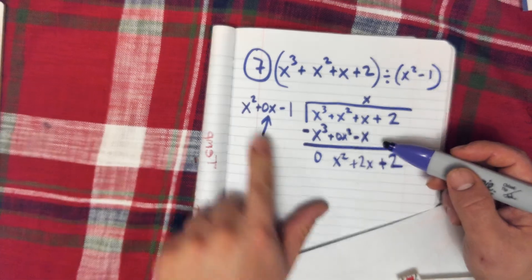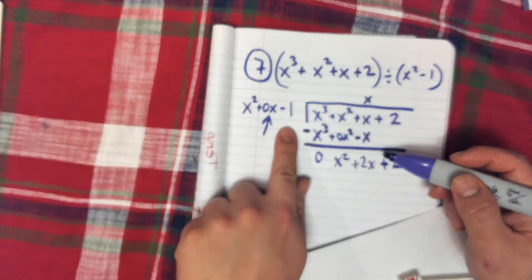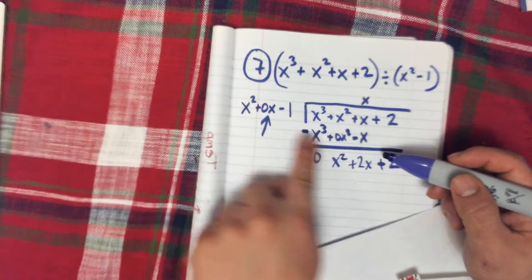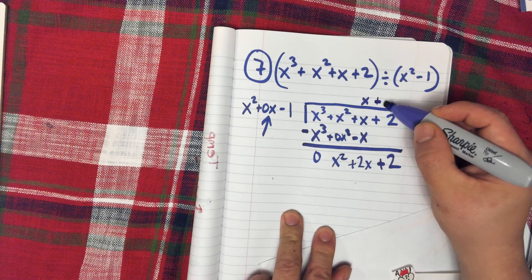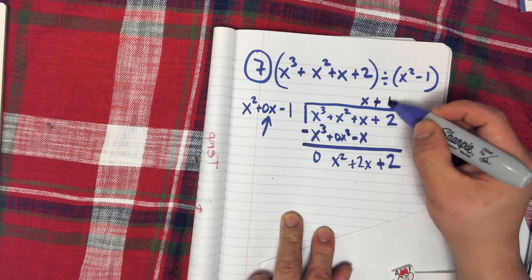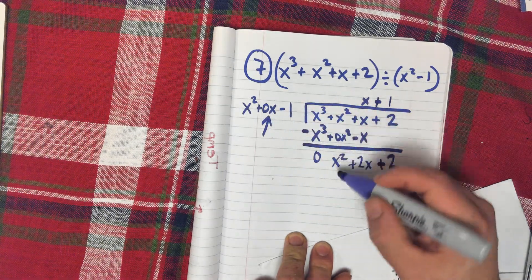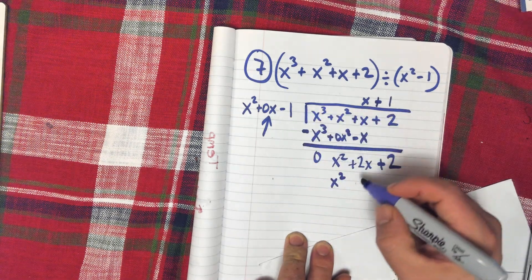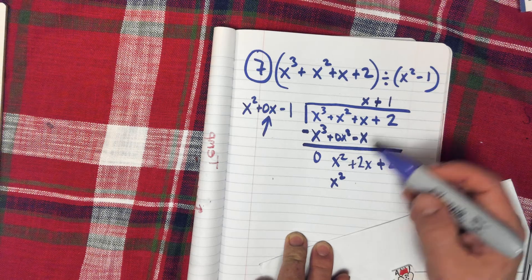Next we have x squared plus 0x minus 1. Times 1: x squared times 1 is x squared, 0x times 1 is 0, and minus 1 times 1 is negative 1.